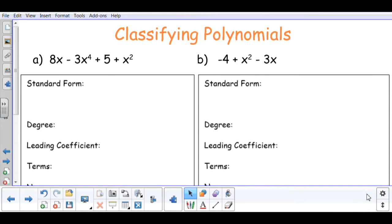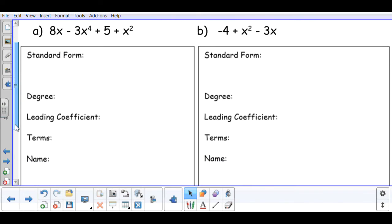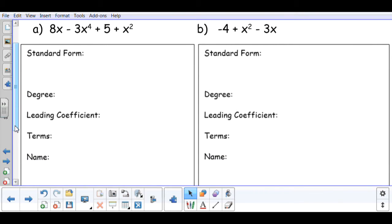When classifying polynomials, we want to put the polynomial in standard form. Standard form is the exponents in descending order, so you want the highest exponent first and the smallest exponent last.